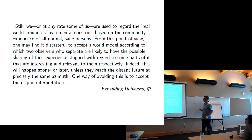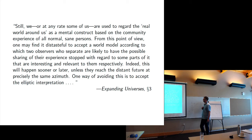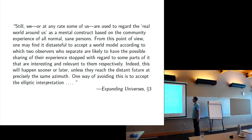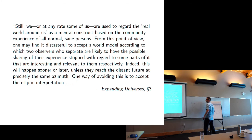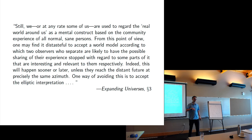Schrödinger's Hegelian explanation: 'Still, some of us are used to regarding the real world around us as a mental construct based on the community experience of all persons. From this point of view, one may find it distasteful to accept a world model in which two observers who separate are likely to have the possible sharing of their experience stopped with regard to some parts relevant to each. One way of avoiding this is to accept the elliptic interpretation.' There's an idea about the functional role of spacetime that he thinks is better fulfilled by elliptic de Sitter than by ordinary de Sitter.